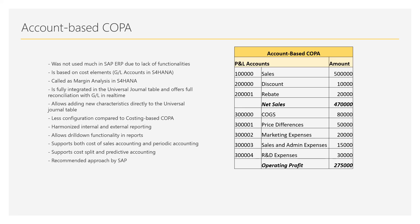As discussed in the second video, costing-based COPA is based on cost-of-sales accounting and cannot be used with the periodic accounting method. Account-based COPA, however, supports both cost-of-sales accounting and periodic accounting. Account-based COPA in S4 HANA also supports COGS split — which will be covered in subsequent videos — and predictive accounting.